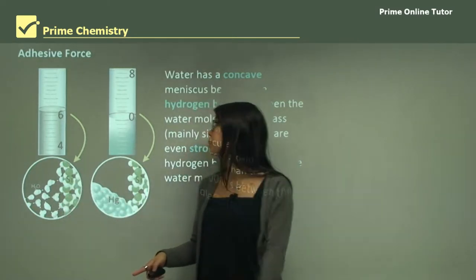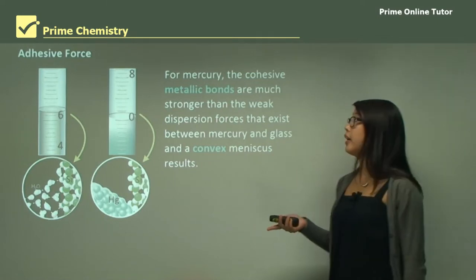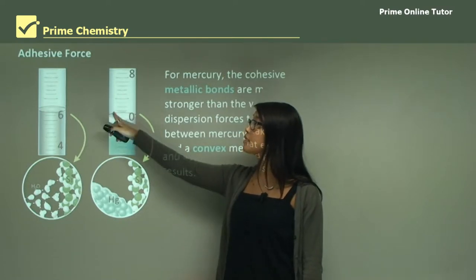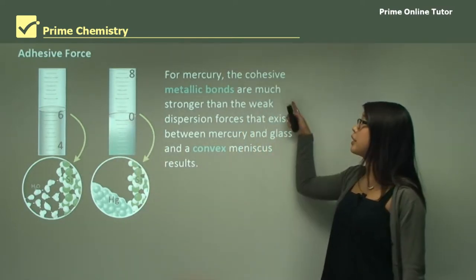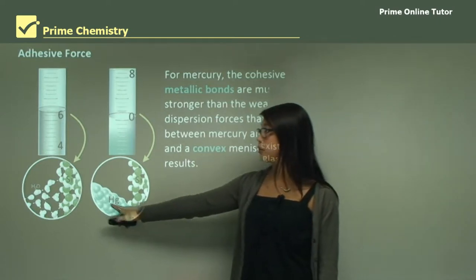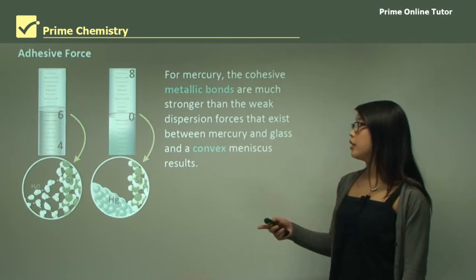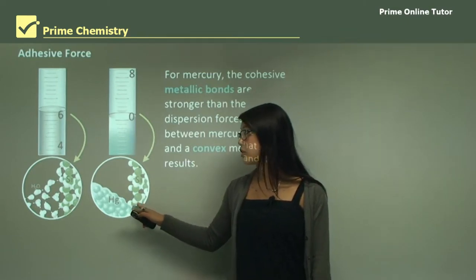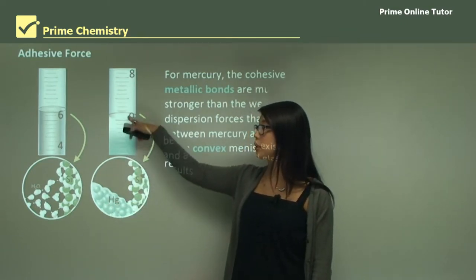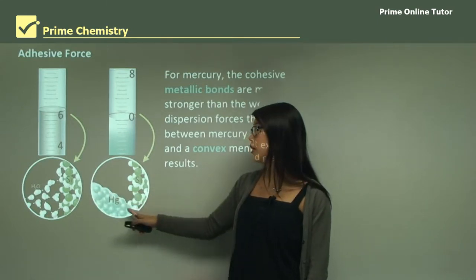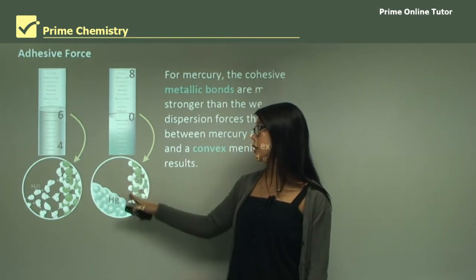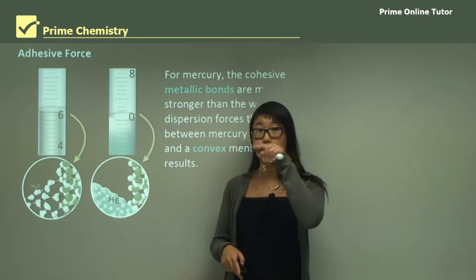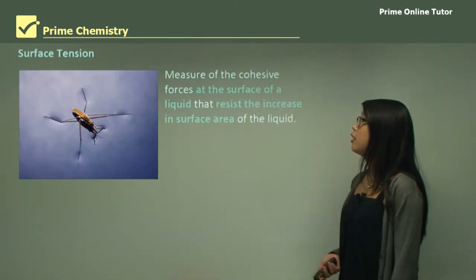Mercury, on the other hand, has a convex meniscus — it pops up — because the cohesive forces in the metallic bonds of mercury are stronger than the weak dispersion forces between mercury and the silicon dioxide. That means the forces pulling the mercury inward toward itself are greater than those attracting it to the glass, which is why we get a bubble shape on top.